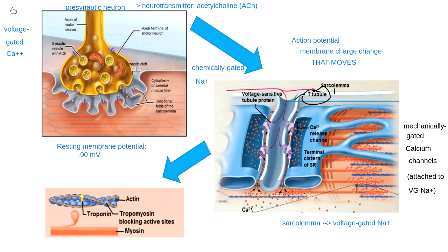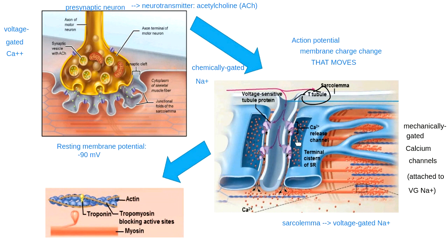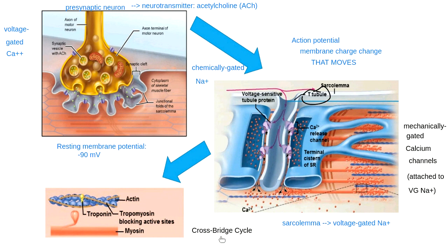So we went from my neuron sending a message that depolarized a little place on the membrane at the neuromuscular junction. Then I used an action potential to get that signal across the entire membrane, especially down into the T-tubules. When it goes down into the T-tubules, it releases calcium from the sarcoplasmic reticulum. The only reason I need to release calcium from the sarcoplasmic reticulum is to be able to do the cross-bridge cycle. Calcium activates or makes the cross-bridge cycle possible.